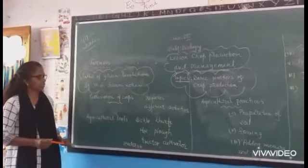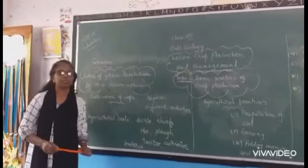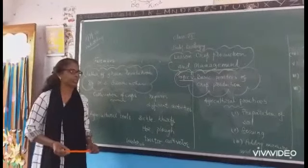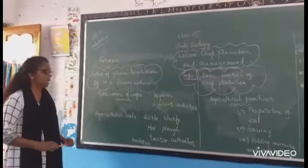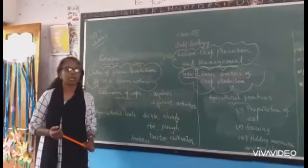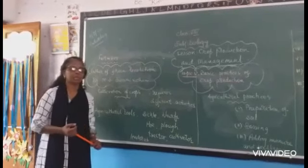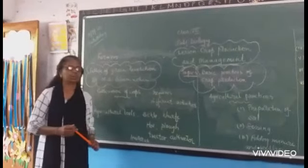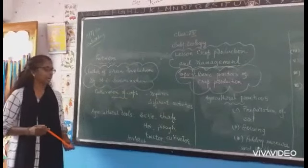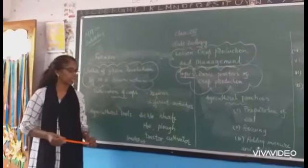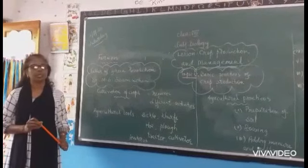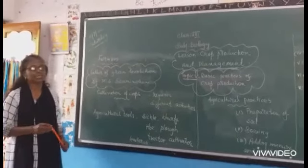So we will come back to the topic. Here, cultivation of crops requires different activities. First, we know that land is required. And before that, we will see some agricultural tools — some tools and equipment are required for agricultural practices. These are meant only for agricultural practices; we do not commonly use them at home. For example: sickle, kurfi, hoe, plough, tractor, cultivator, and leveler. These all are tools meant for agricultural practices.